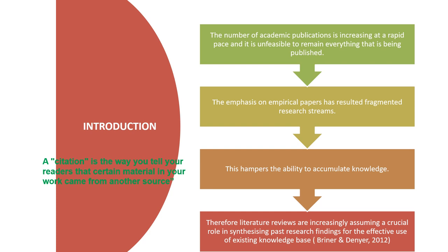A citation is the way you tell your readers that certain materials in your work came from some other sources. So why is citation analysis more important nowadays? The number of academic publications is increasing at a rapid pace and it is unfeasible to keep track of everything that has been published. The emphasis on empirical papers has resulted in fragmented research streams, which hampers the ability to accumulate knowledge.